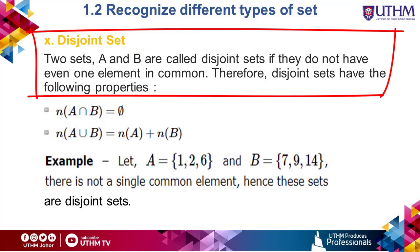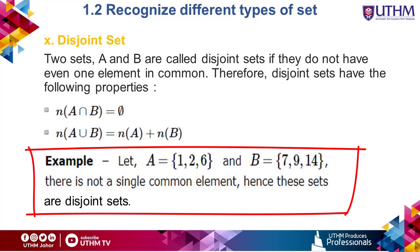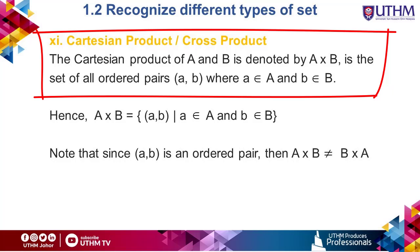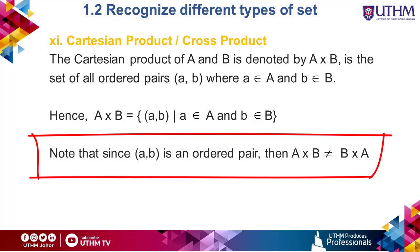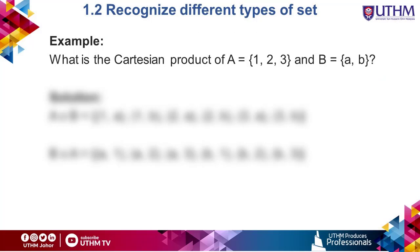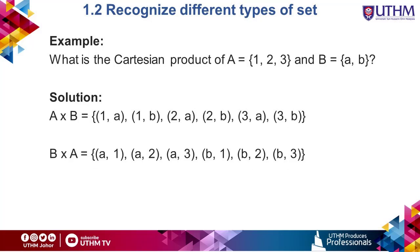A disjoint set means that two sets A and B have not even one element in common. For example, set A has values 1, 2 and 6 while set B has values 7, 9 and 14. Since there is no single common element, these sets are disjoint. The Cartesian or cross product of A and B is denoted by A times B. It is the set of all ordered pairs (a, b) where a is a member of set A and b is a member of set B. Note that A times B is not equal to B times A, because the arrangement of pairs for these two conditions is different. The results for both conditions are shown on the slide.